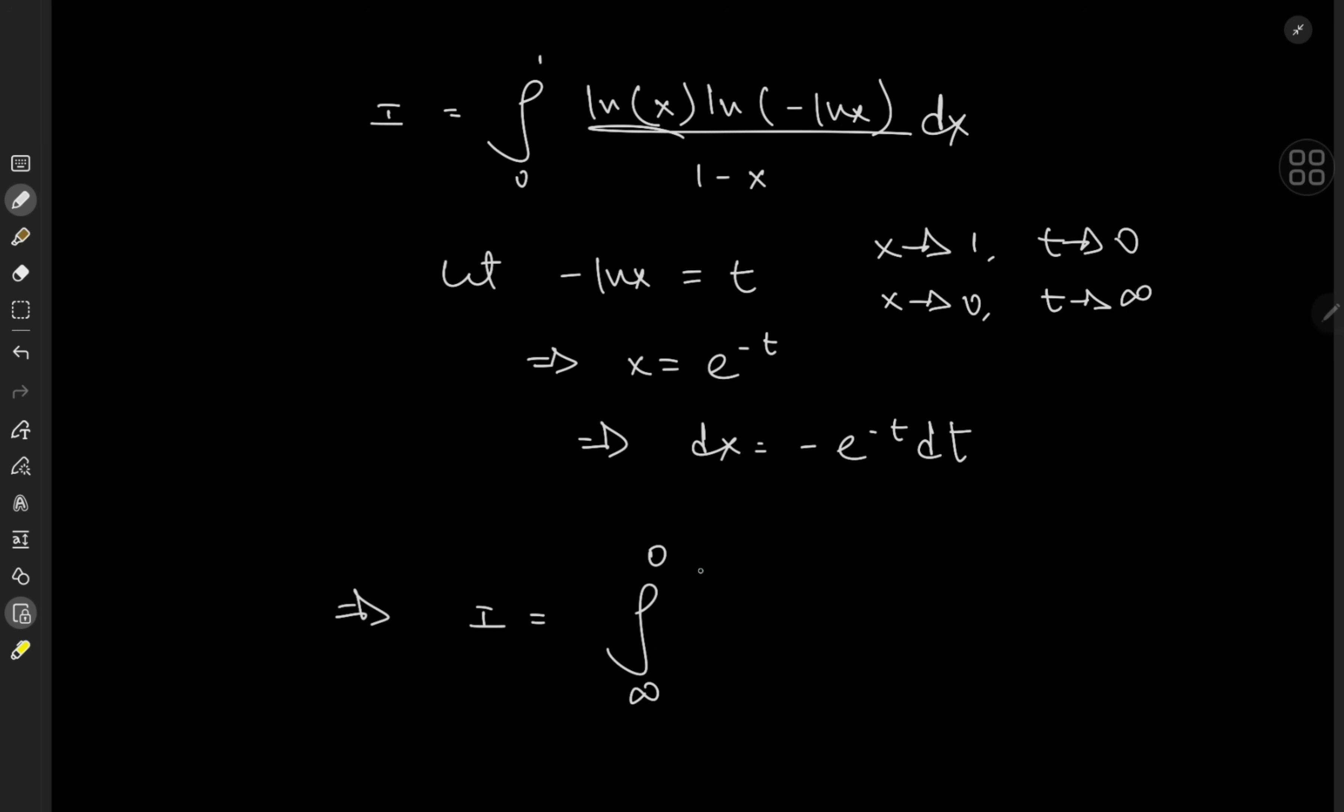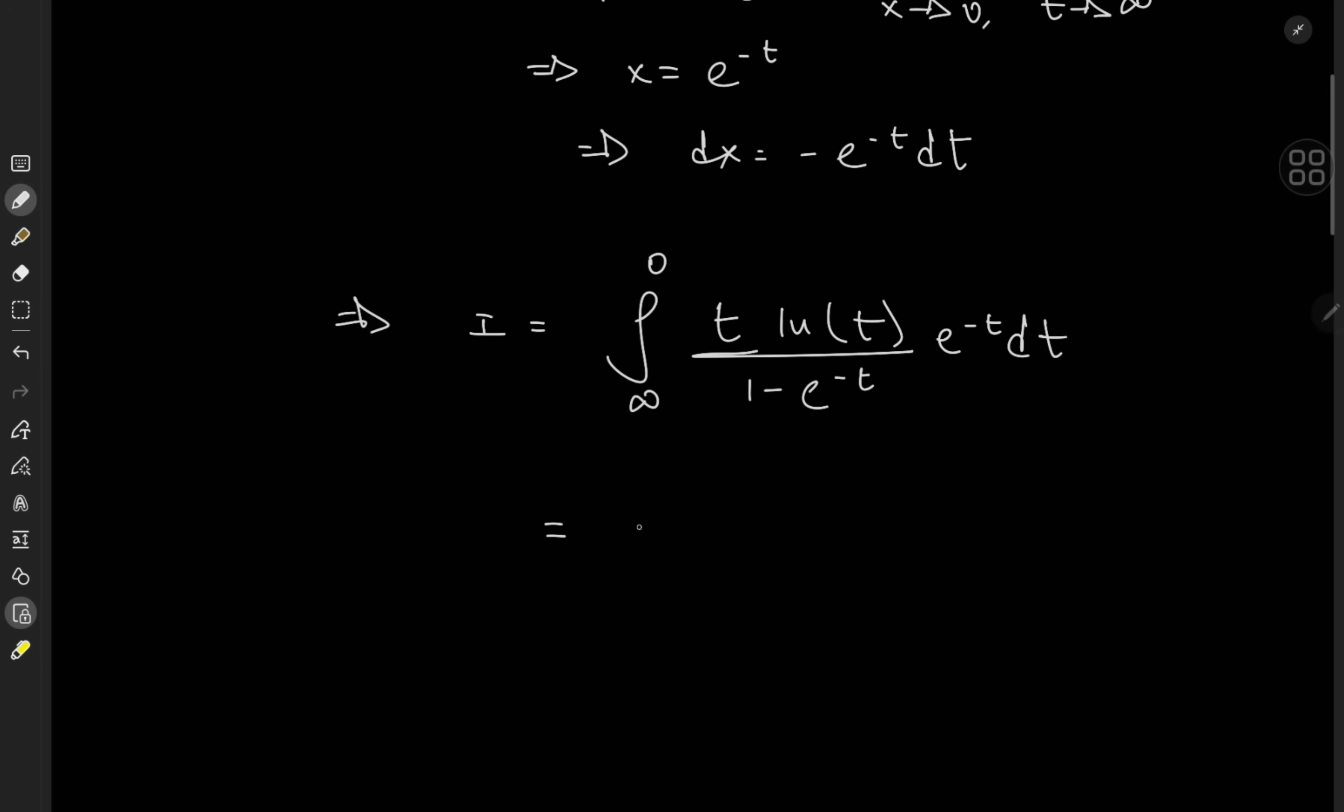So that implies that the target integral i is now the integral from infinity to 0 of log x, which is of course negative t. Then you have log of t over 1 minus e to the negative t times e to the negative t dt with another negative sign that cancels out over here quite nicely. However, we do have the limits of integration being infinity and 0, which does look kind of weird. Terribly sorry about that. So I'd like to switch them up to yield the integral from 0 to infinity of t times e to the negative t log t over 1 minus e to the negative t dt.